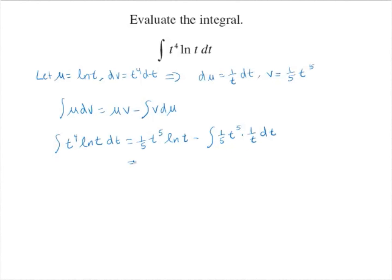And this equals one-fifth t to the fifth times the natural log of t. And combining the terms here, t to the fifth divided by t is t to the fourth, so minus the integral of one-fifth t to the fourth dt.